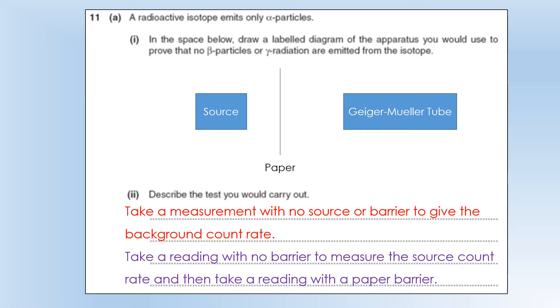Then take a reading with no barrier to measure the source count rate. And then finally take a reading with the paper barrier. Those are the three measurements we'd need to take. We'd repeat each of those measurements naturally.